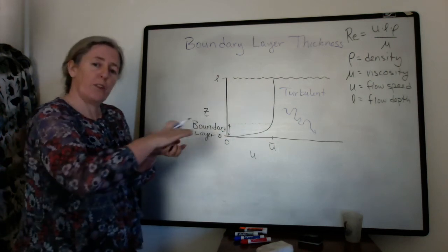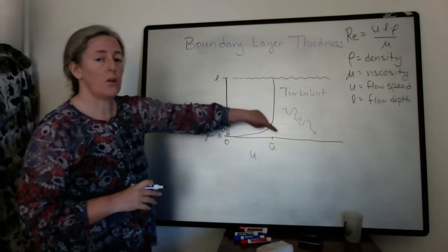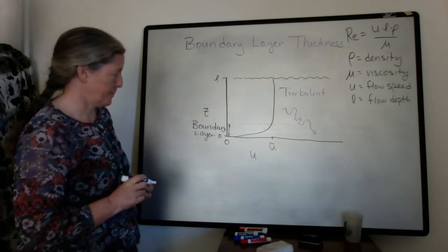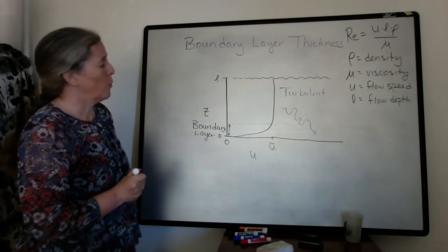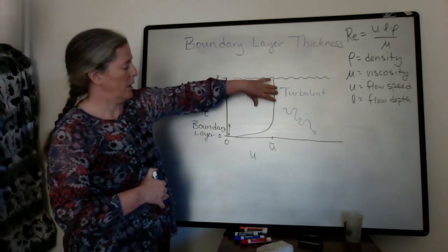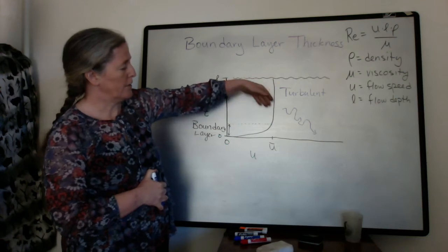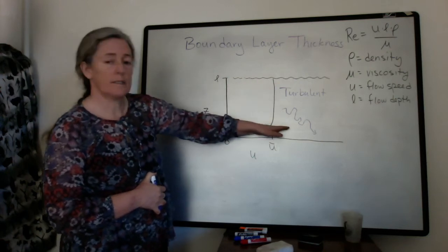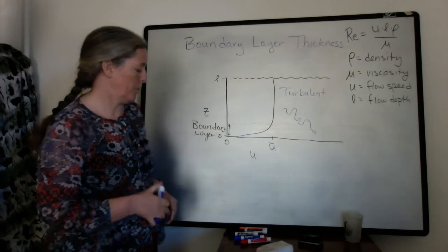There's both the friction within the flow, but then also this increase of turbulence. And so anything that increases the turbulence of the flow tends to lead to more turbulence being directed down towards the bottom of the bed.